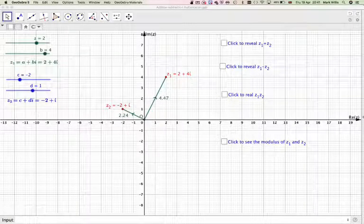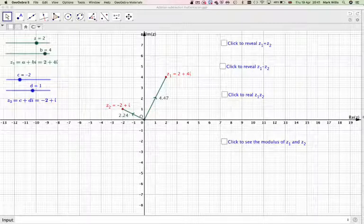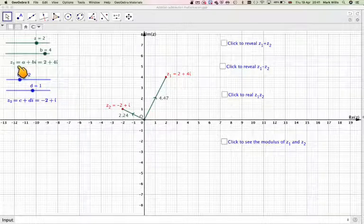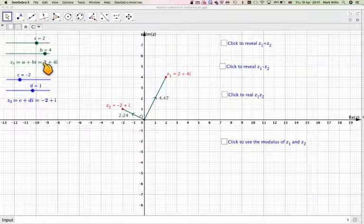Hi, in this video we're going to look at representing complex numbers in what's known as an Argan diagram. Here we've got two complex numbers. Let's just look at Z1 for the B rule. Z1 is A plus BI, so if you change A and change B, it will change these.